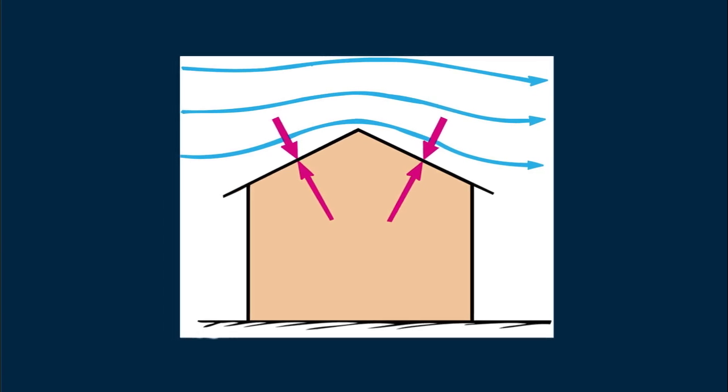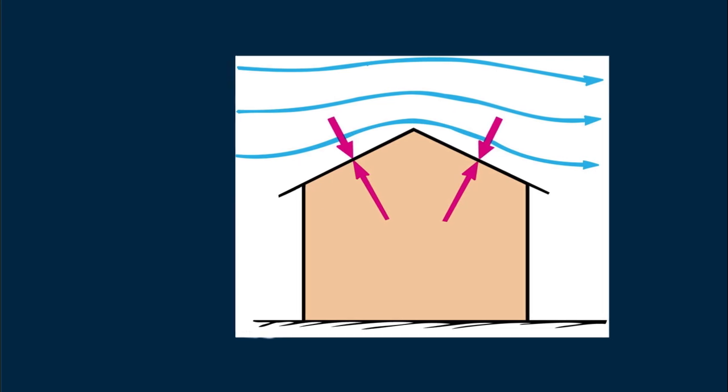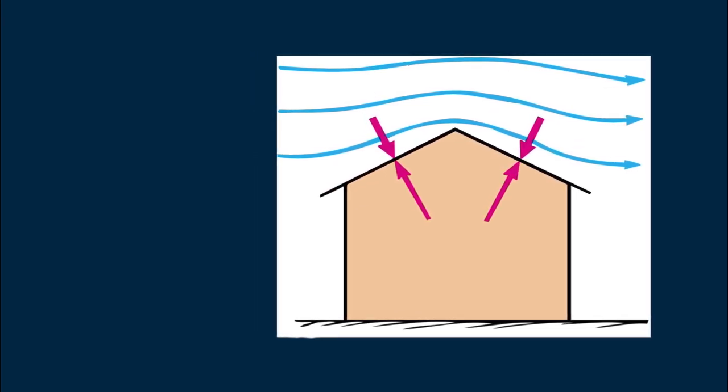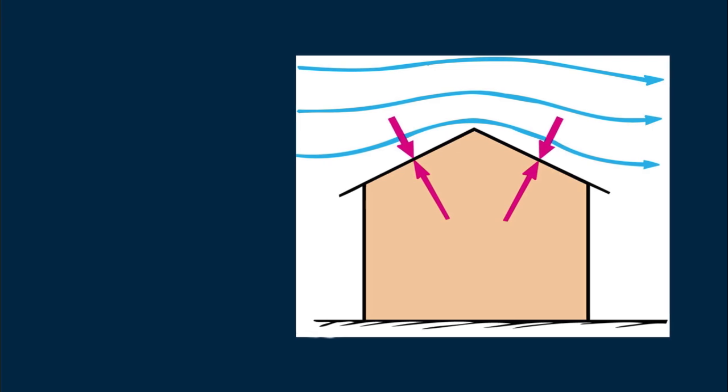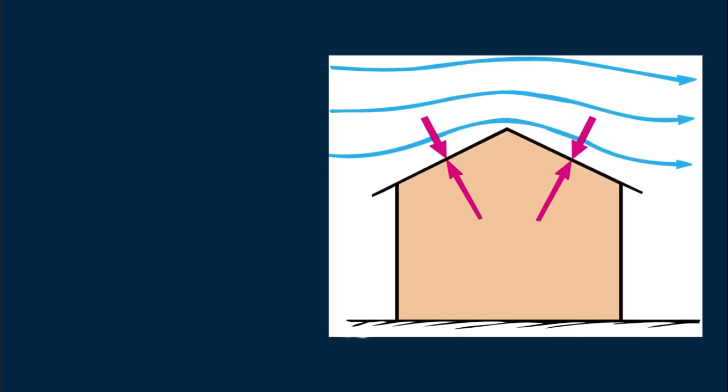But air pressure beneath the roof inside the house is more or less at atmospheric pressure, appreciably greater than the pressure above the roof. So the roof is in danger not of being blown off, but pushed off by the greater air pressure inside. How about that?